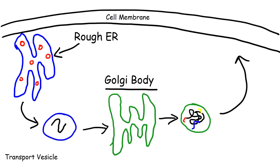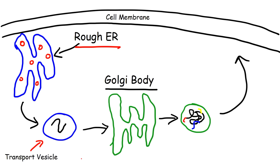Here is a visual illustration of what happens to a protein in a cell. The protein begins at the rough ER because that's where the ribosomes are, and ribosomes' job is to make proteins. The protein then leaves the rough ER by means of a transport vesicle — you can see the protein inside of this vesicle — and it goes to the Golgi body for processing and modification.